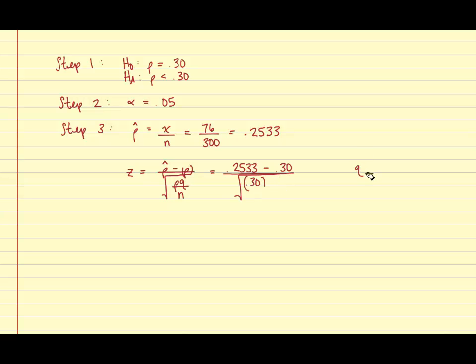Recall that Q is equal to 1 minus P. And so 1 minus 0.30 will be equal to 0.70. And our sample size was 300. Once we perform the math, we get a Z equaling negative 1.76.